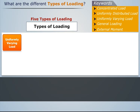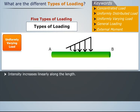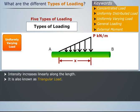Now let us understand uniformly varying load. Consider a beam which has a load whose intensity increases linearly along the length. A uniformly varying load is also known as a triangular load and can be represented by the triangle as shown in the figure.